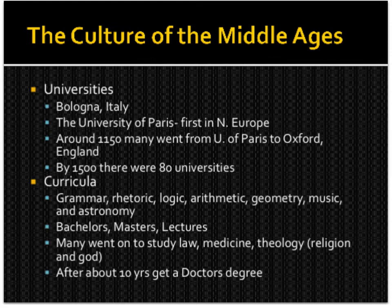The curricula included grammar, rhetoric, logic, arithmetic, geometry, music, and astronomy. This is where we get the modern-day degrees we still use: the bachelor's, the master's, and lectures. Many went on to study law, medicine, and theology — the study of religion and God. After about 10 years, you could earn a doctor's degree.